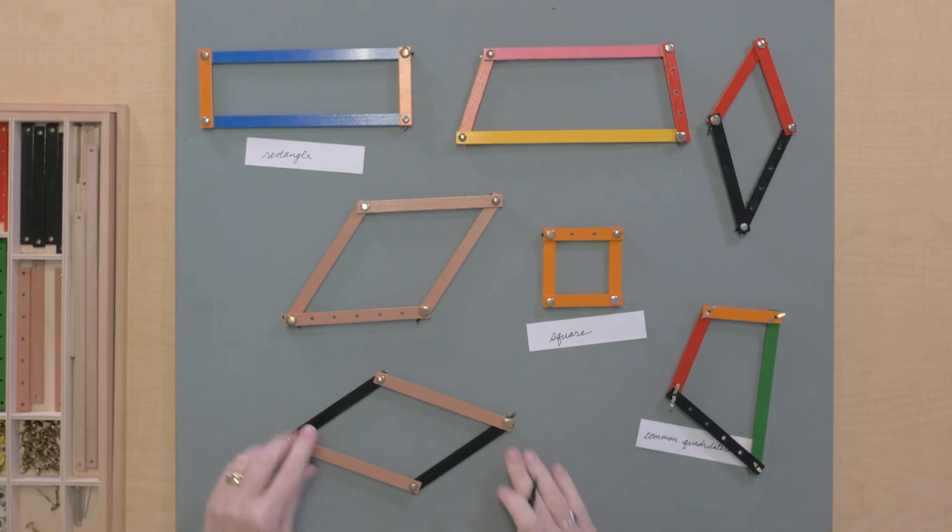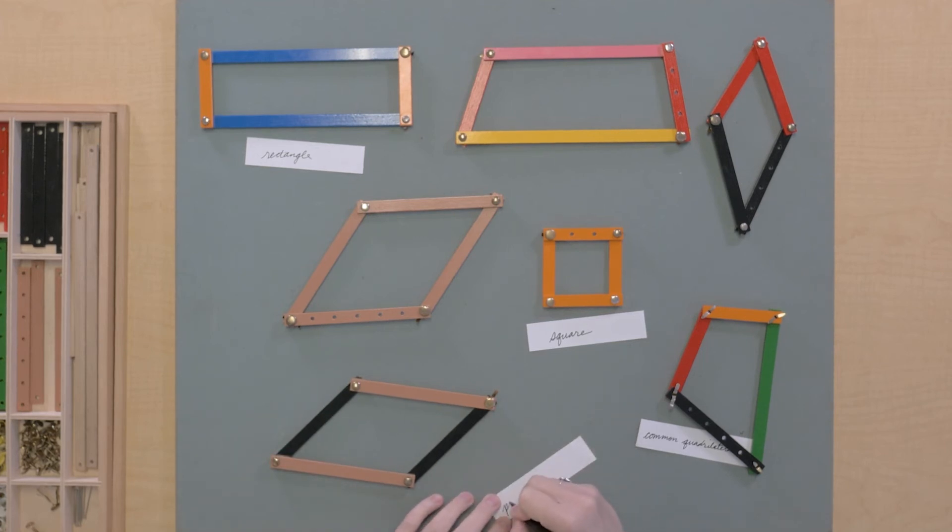This one is a parallelogram. It's got two pairs of sides that are the same length. Here we've got a rhombus.